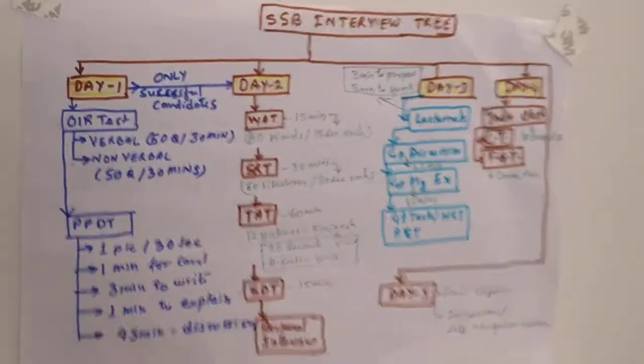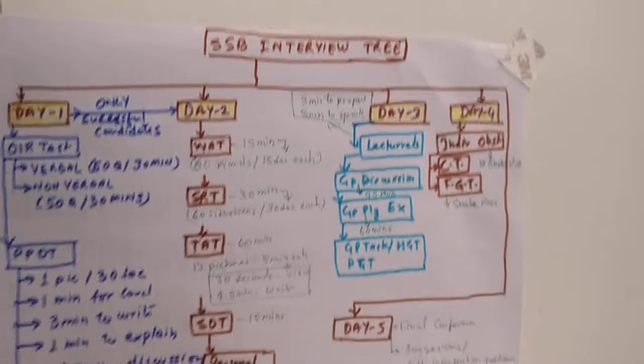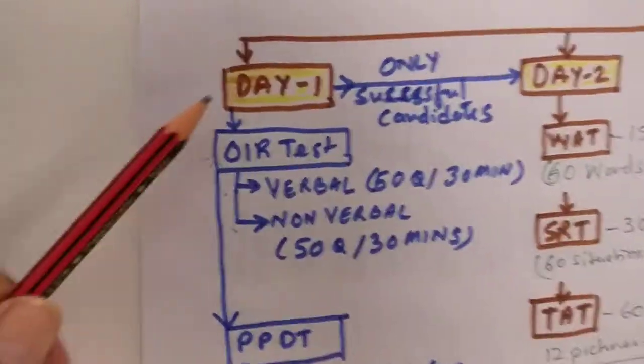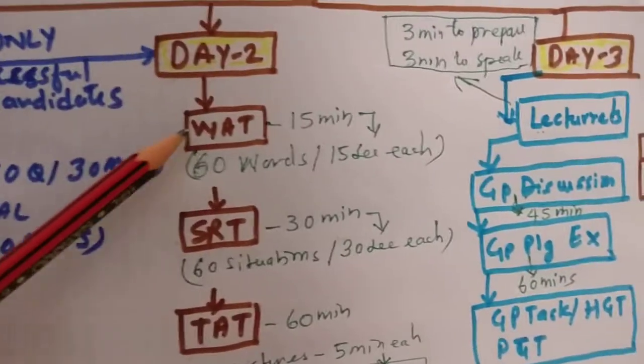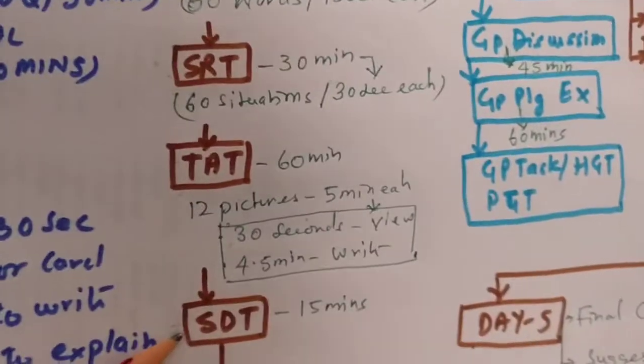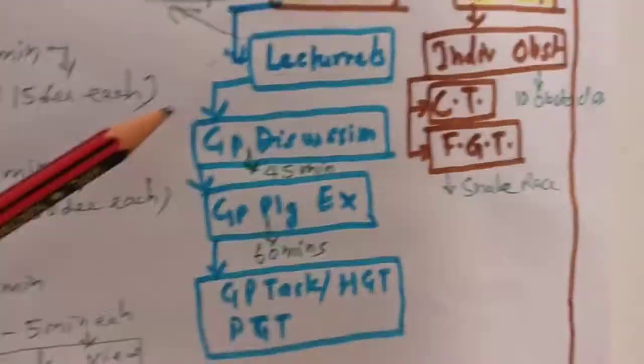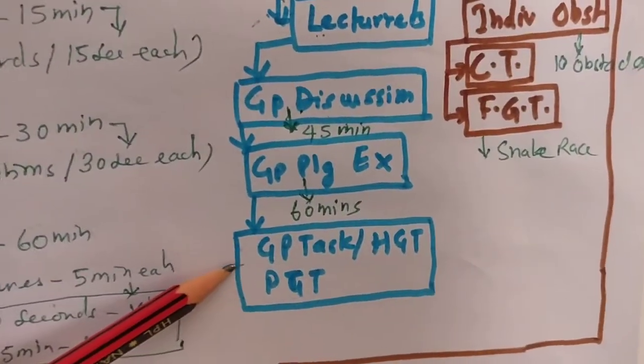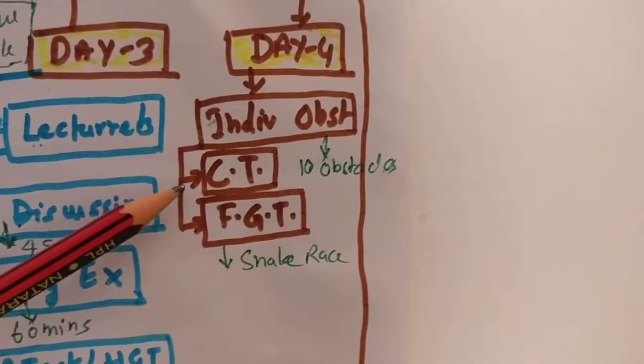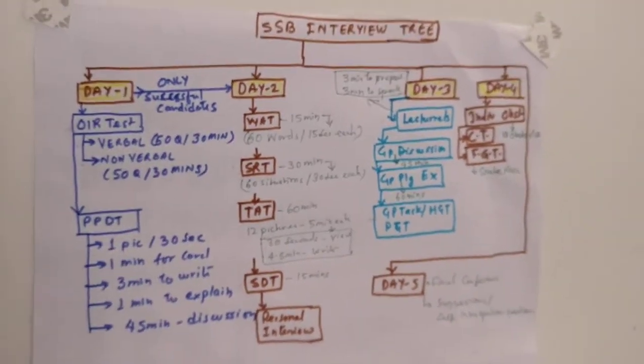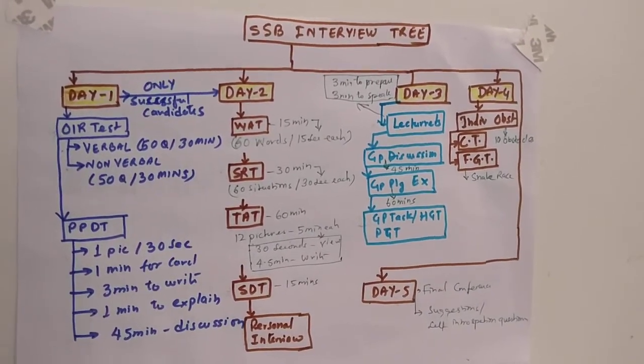So this is how the five day schedule of SSB looks like. I will summarize once again: first day you have OIR test and PPDT. Second day you have WAT, SRT, TAT, SDT, and personal interviews. Third day you have lecturette, group discussion, group planning exercise, group task, HGT, PGT. Fourth day you have individual obstacles, command task, FGT. And fifth day is the final conference day. So hope this schedule is clear to you all. Thank you for watching.